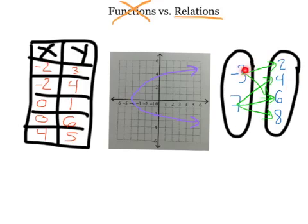If we look at the mapping diagram, we have two inputs — negative 3 and 7 — but four outputs. Negative 3 is paired with both 2 and 6, and 7 is paired with 4, 6, and 8. These inputs do not have exactly one output. There are multiple arrows coming out of each input, which means they have multiple outputs, so this is not a function.